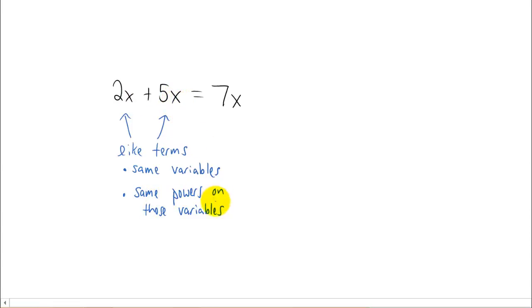And they have to have the same powers on those variables. So again, in this case, x was to the first power here. And x was to the first power here. They have the same variables with the same powers. So they're like terms and we can combine them just by adding their coefficients.